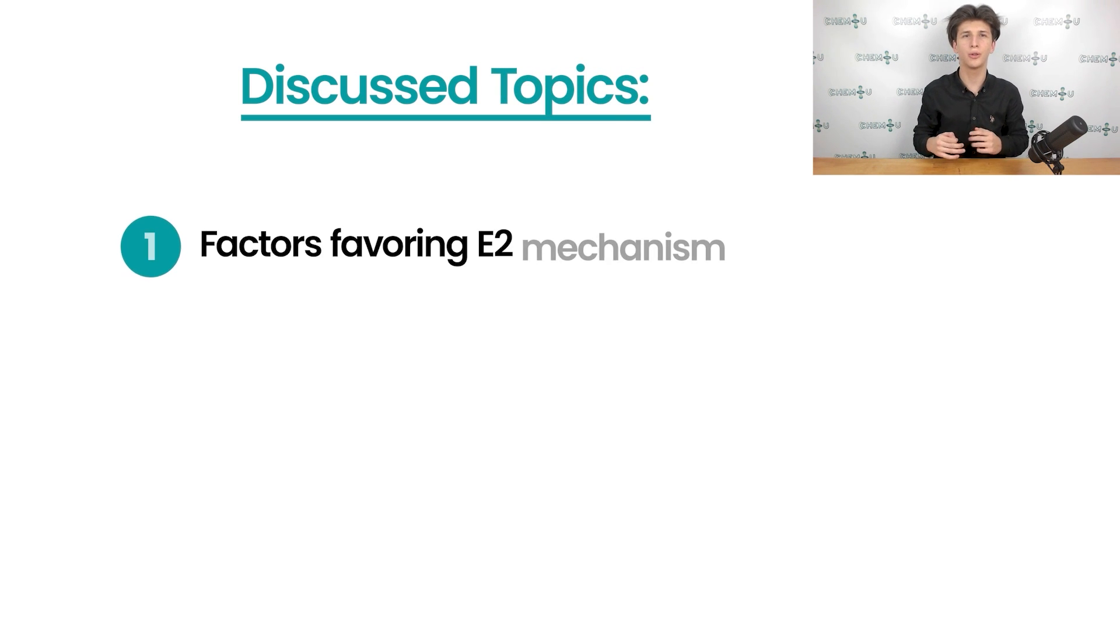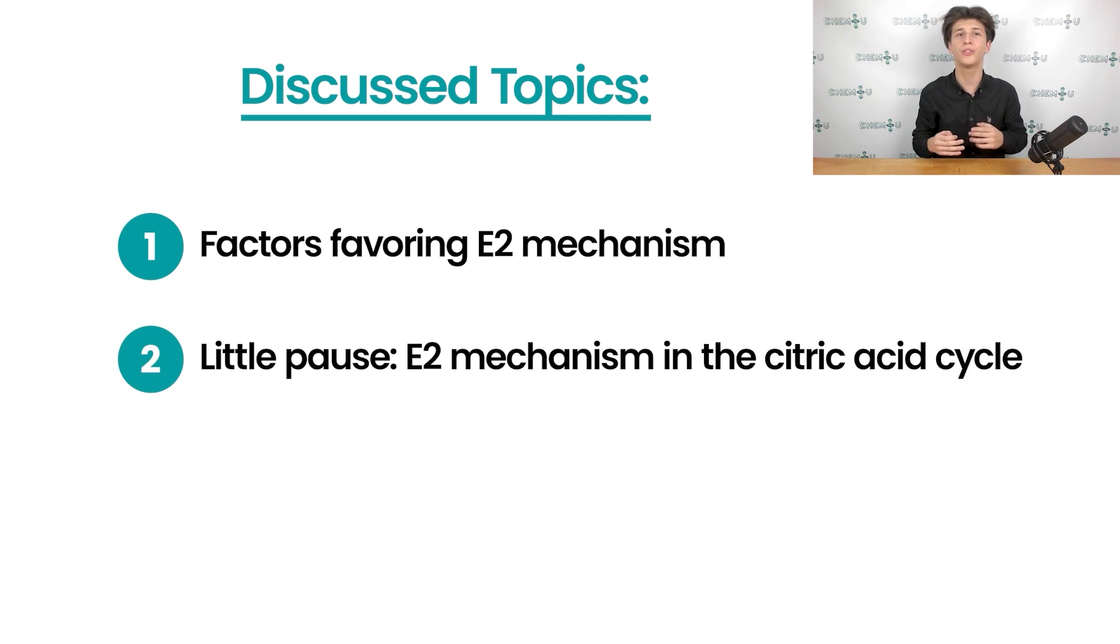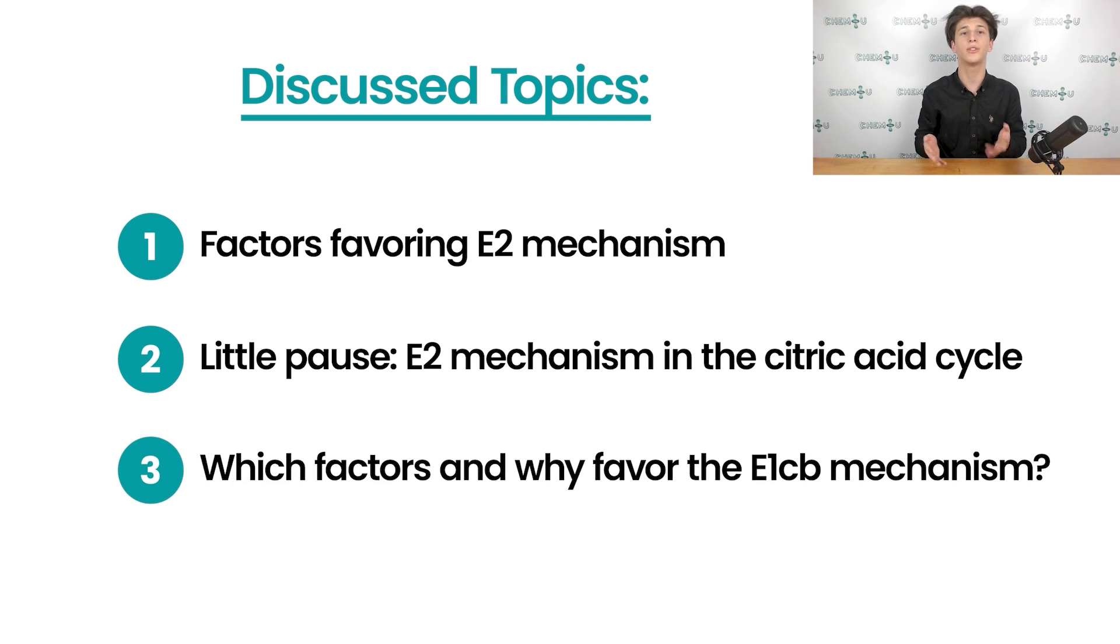We have begun with a thorough discussion of how various factors influence the E2 mechanism. Then, we had a little pause and discussed the role of the E2 elimination mechanism in the citric acid cycle. Lastly, we have determined the influence of the same factors as before on the E1CB mechanism and summarized all the necessary information in one beautiful table for convenience.